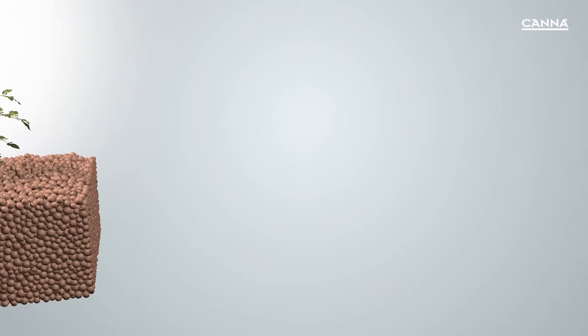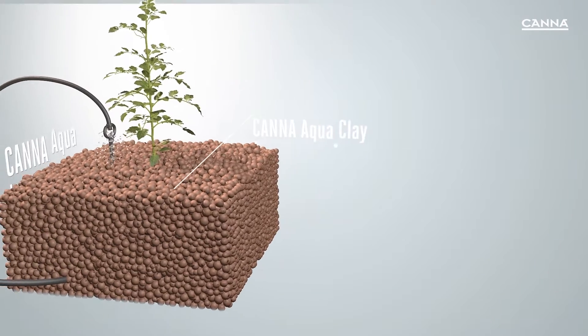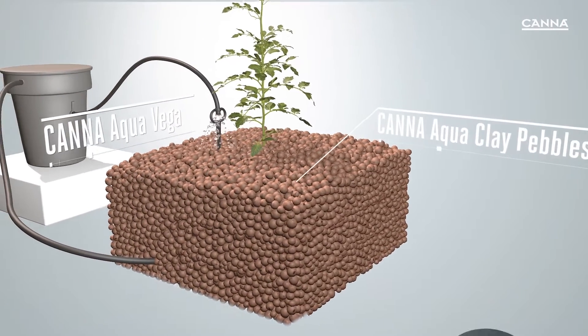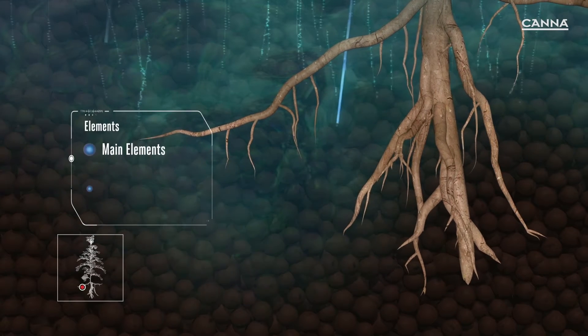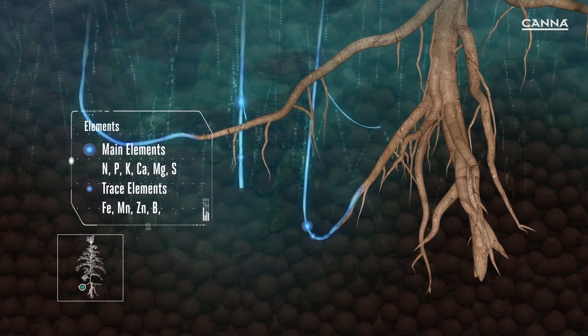Canna Aqua Vega contains all the essential ingredients that your plant needs for the all-important growth phase. This will ensure that your plant gets stronger and grows faster using clay pebbles in a recirculating system.